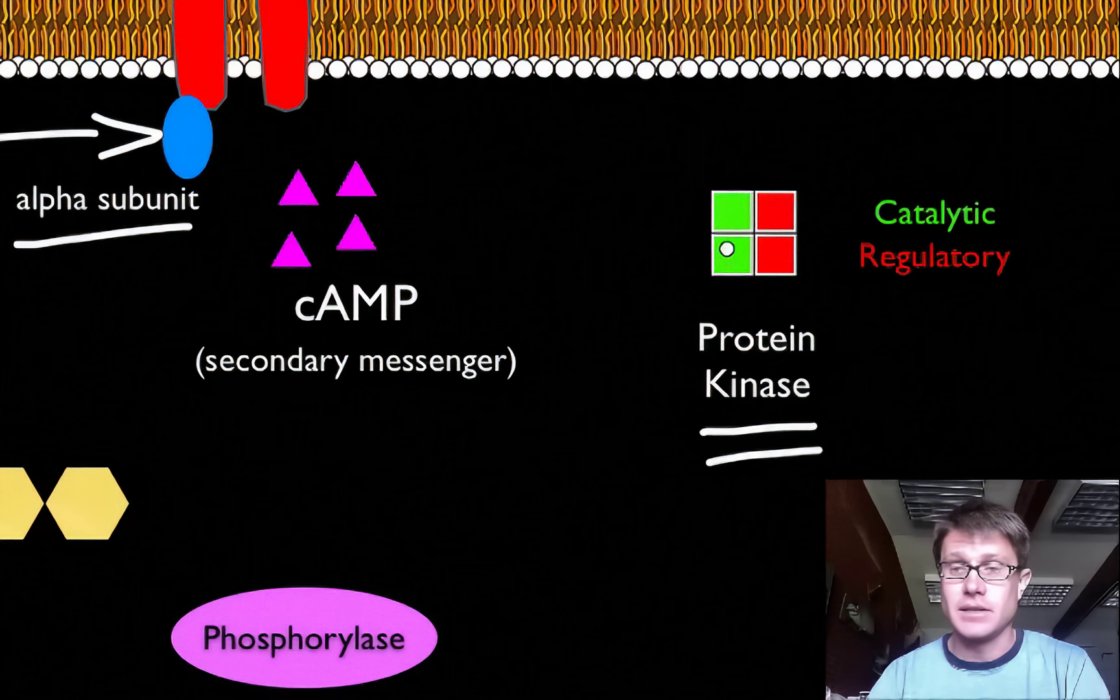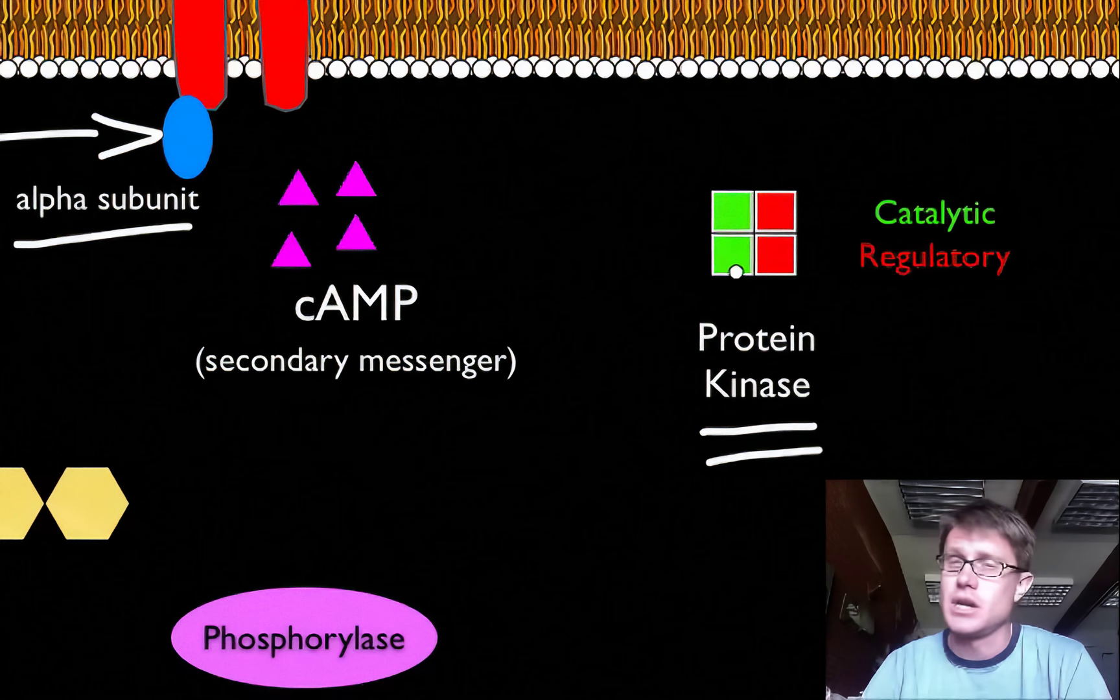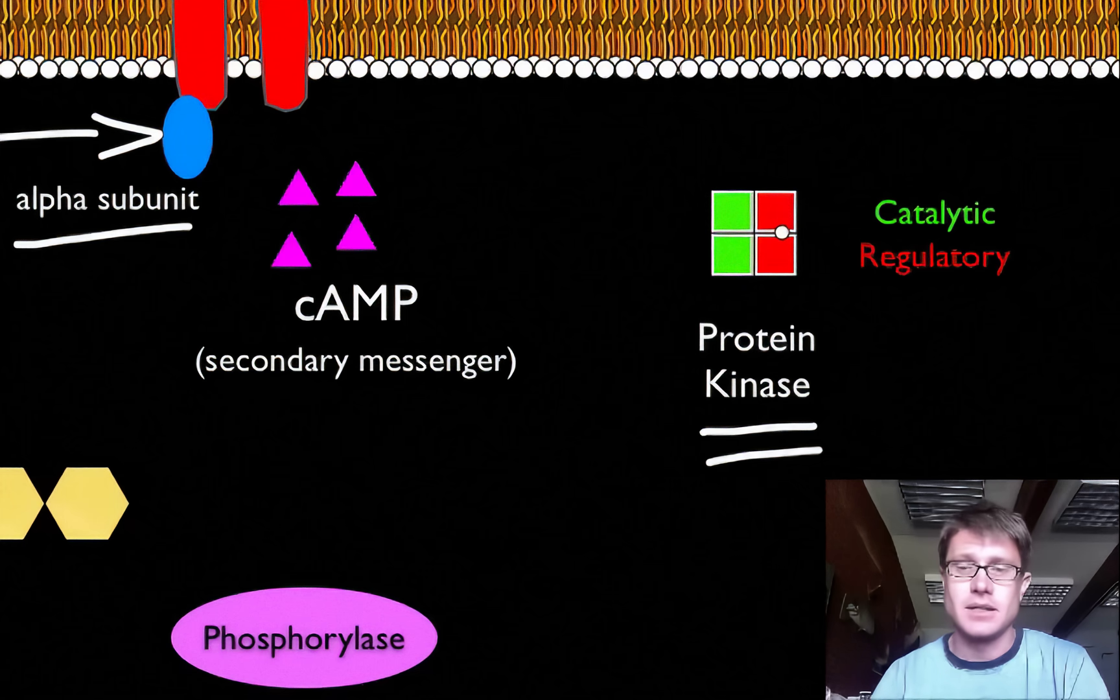In this case this protein kinase is going to have two catalytic subunits. Catalytic means things that are going to speed or speed up chemical reactions. And then it has these two regulatory subunits. And so as long as the regulatory portions are attached to the catalytic portions, protein kinase is inactivated. It's not going to do anything.